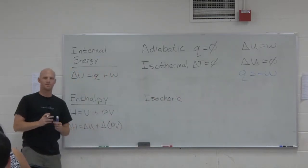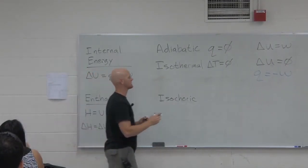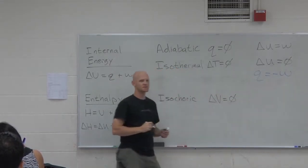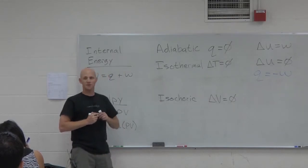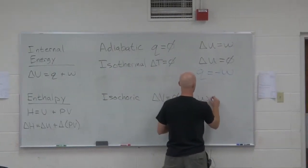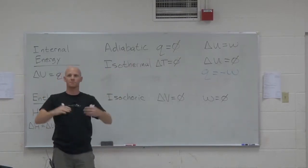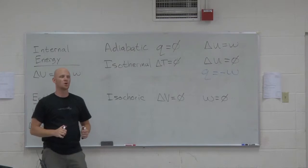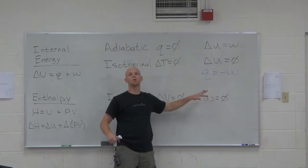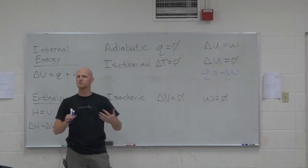Let's go to an isochoric process. So delta V is zero. And if delta V is zero, you might figure out that there's no expansion work done whatsoever. If the gas didn't expand or get compressed, no work is performed on or by the gas. This assumption, though, assumes that there's no other type of work going on. Expansion work is not the only type of work, but in this chapter where we're doing a lot of problems with gases, it's usually the one we consider.